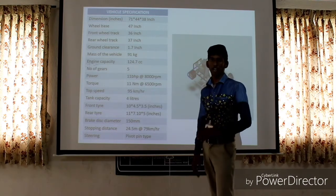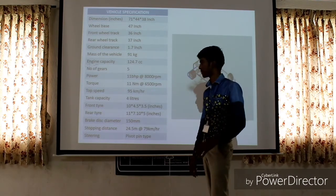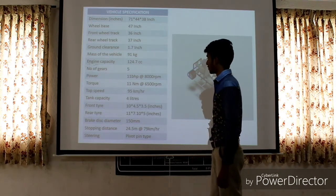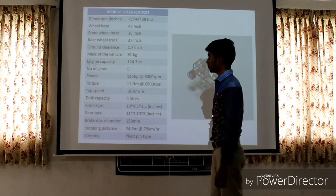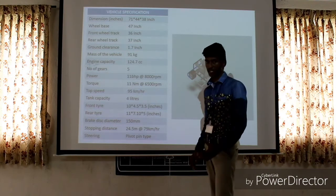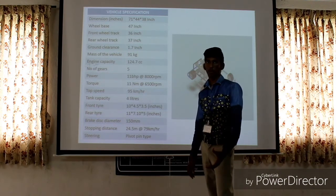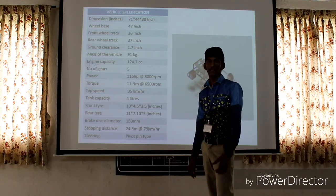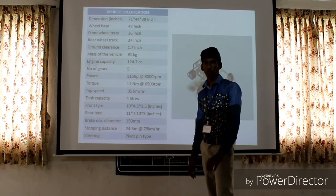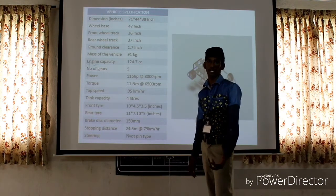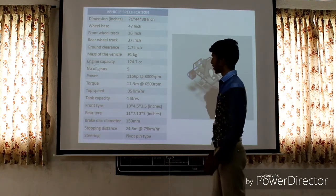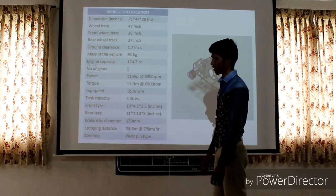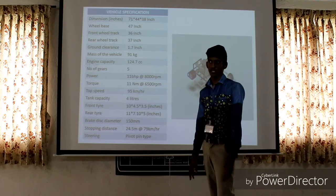The tank capacity of our cart is 4 liters. Ground clearance of our cart is 1.7 inches. Ground clearance means the impediment distance going down to the chain spike. The wheelbase of our cart is 47 inches.